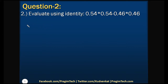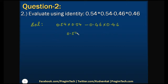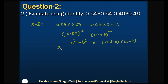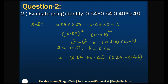Let us solve question number two: evaluate using identity 0.54 × 0.54 - 0.46 × 0.46. We can write this as (0.54)² - (0.46)², which is in the form a² - b² = (a + b)(a - b). Here a = 0.54 and b = 0.46, so it becomes (0.54 + 0.46)(0.54 - 0.46) = 1 × 0.08 = 0.08.